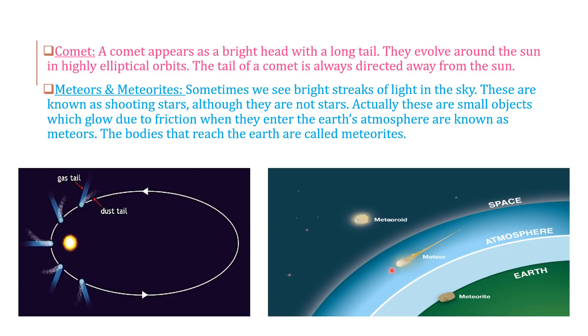Meteors and meteorites - sometimes we see bright streaks of light in the sky. These are known as shooting stars, although they are not stars. Actually, these are small objects which glow due to friction when they enter the earth's atmosphere. This is meteor. And the bodies that reach the earth's surface are called meteorites.